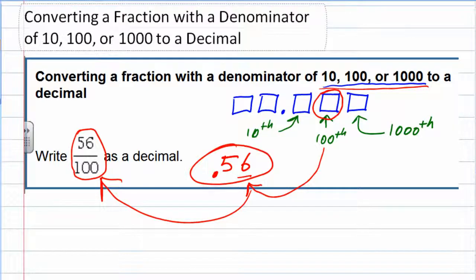This would be our decimal answer. 0.56, and again, another way of saying that would be 56 hundredths. That's the way that we would say this decimal, which happens to also be the way that we would say the fraction. 56 hundredths is 56 hundredths.